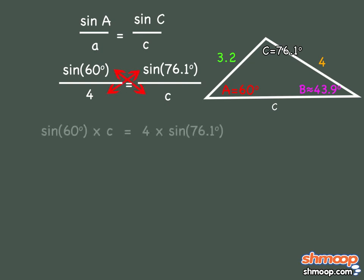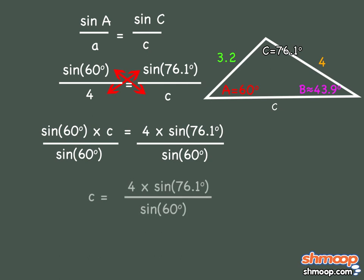Sine 60 degrees times c equals 4 times sine 76.1 degrees. To isolate c, we can divide both sides by sine 60 degrees to get that c equals around 4.5.